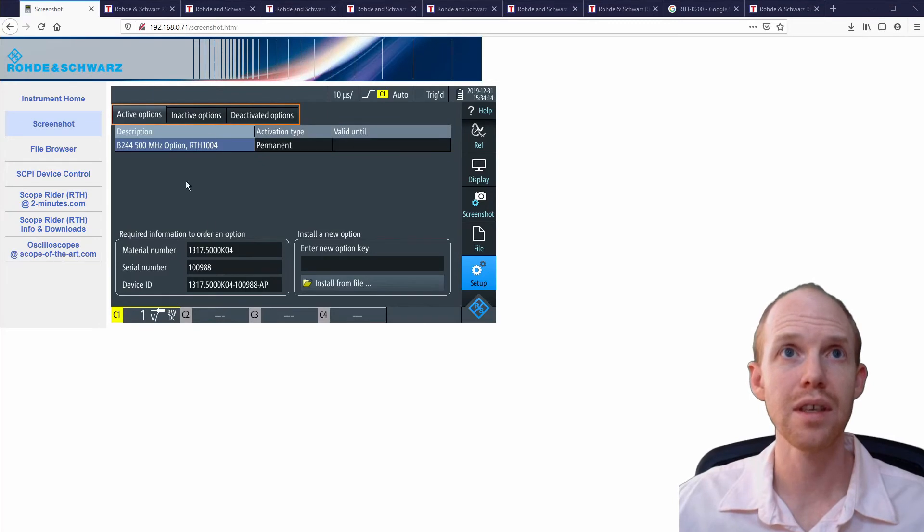In the setup, there's also this options section here where it shows which software keys you've installed, and these are all the extra upgrades that cost lots of money. So mine looks like it does have the 500 MHz option, which was the main one that I wanted.